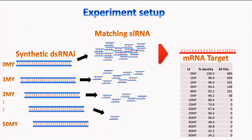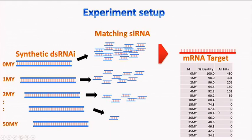We made constructs starting at zero million years — no change, 100% identity — then in smaller steps: 98%, 96%, down to 90%, then in larger steps. We ran this through Bowtie and expected the hits to decrease along with identity. At 100%, you get 408 hits from siRNAs to the target, decreasing to zero at the end where you no longer hit your target.